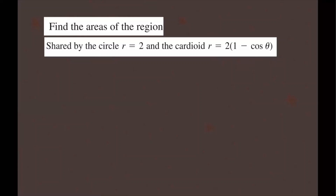Let's find the area of the region shared by this circle, r equals 2, and the cardioid r equals 2 times (1 minus cosine theta). You can also write this as 2 minus 2 cosine theta. That's a cardioid along the x-axis, oriented in the negative x direction.